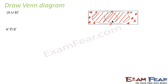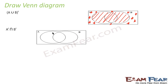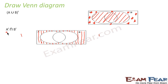Now let's find A complement intersection B complement. A complement is anything outside A. Drawing this with horizontal lines — this whole area outside the circle A is A complement, because it is anything that is not in A.